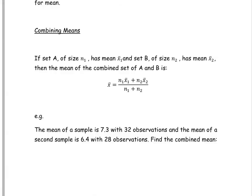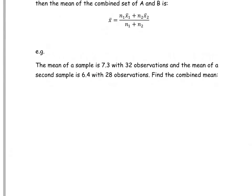The mean of a sample is 7.3 with 32 observations, and the mean of the second sample is 6.4 with 28 observations. We want to find the combined mean.